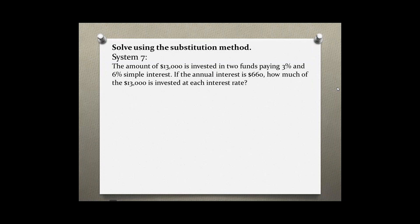We are told to use the substitution method and we are given a word problem. This is a simple interest rate problem, so we need to know a formula. The formula is I equals PRT, where P is the principal, R is the rate, T is the time in years, and I is the interest.